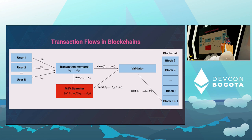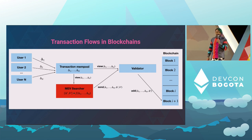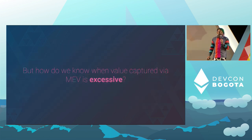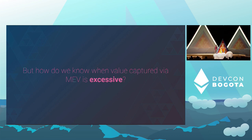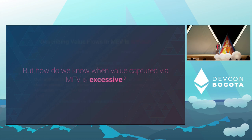Schematically, MEV works like this: we have users who submit transactions — the deltas — we have a mempool, the searcher has their own view of the mempool, and maybe they have some transactions directly given to them, which people call private order flow. The searcher sends their bundle, which they're willing to pay for, to the validator, and the validator adds it to the block. The philosophical question is: how do we know value captured by MEV is excessive? In this first definition I said 'any excess value' — but how excessive is excess?